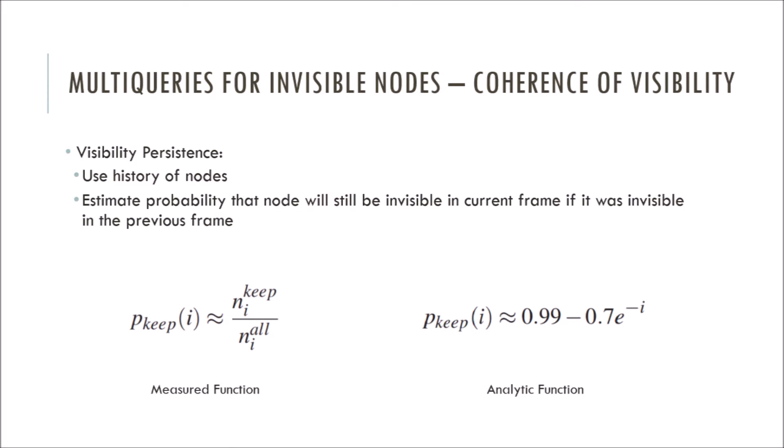To do this, we first need to estimate the coherence of visibility. This means with knowing the visibility state of a particular node, either visible or invisible, we aim to estimate the probability that this node will keep its visibility state in the next frame. There is a strong correlation of this value with the history of the node, or the number of frames that the node has kept the same visibility state. Nodes that have been invisible for a very long time are likely to stay invisible, such as a car engine. This quantifiable measure of a node's history is known as visibility persistence.